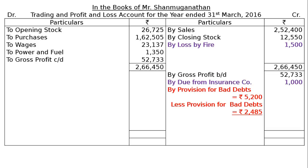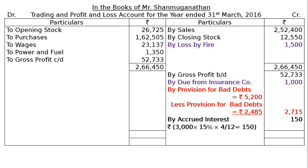Provision for doubtful debts is to be maintained at 5% on sundry debtors. After deducting Rs. 500 from debtors: Rs. 50,200 minus Rs. 500, multiplied by 5% equals Rs. 2,485. The net figure shown in the final column is Rs. 2,715. Regarding accrued interest — a loan was given to Mr. Subbu at 15% per annum on 1st December 2015. From December to March is 4 months: Rs. 3,000 × 15% × 4/12 = Rs. 150. This accrued interest of Rs. 150 is shown as a current asset.